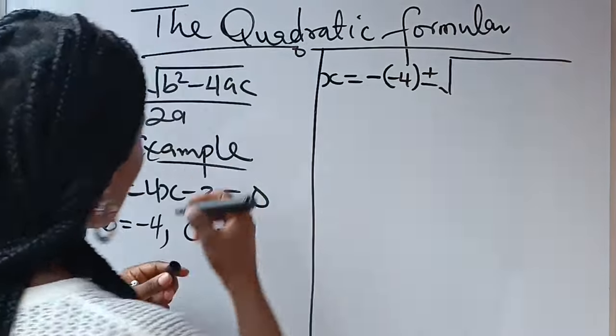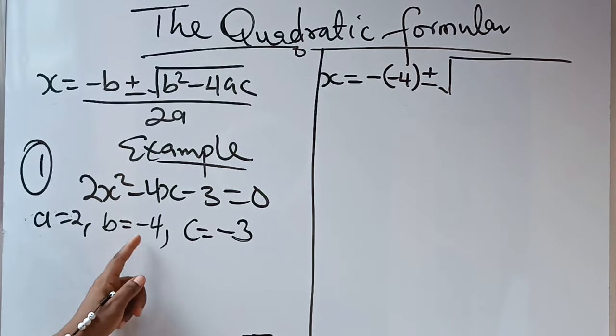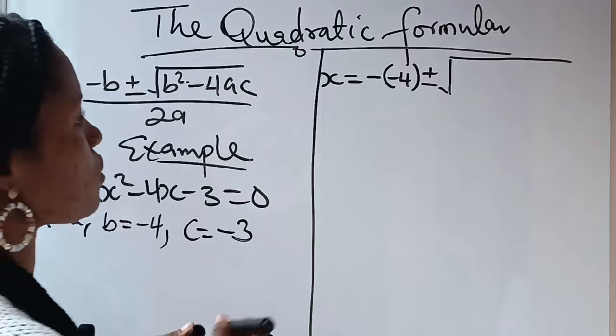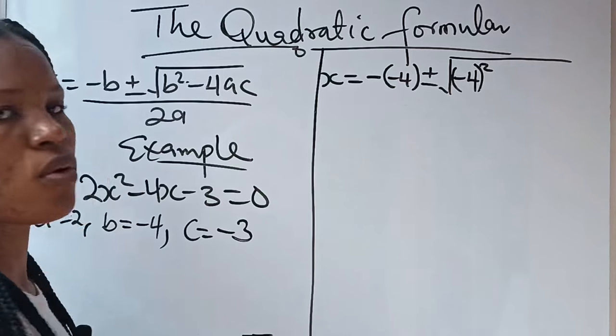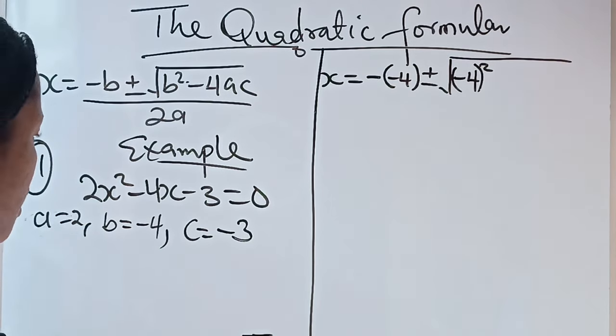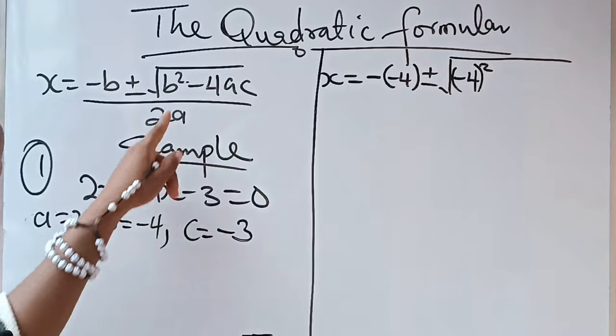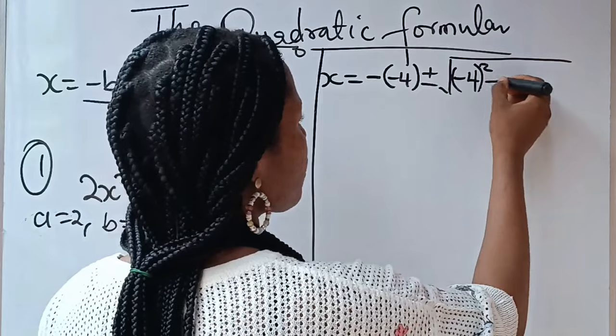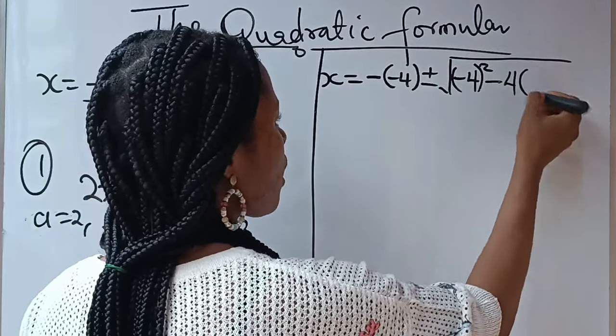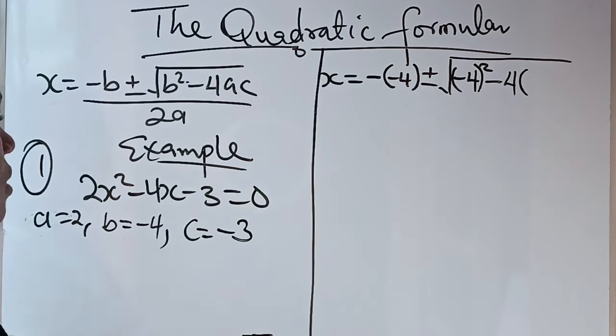Square root of, now, what is our B? Our B is -4. -4² is what we are going to write now because our B is -4. So, our B is -4, so we are going to square it, which is what I just did here.